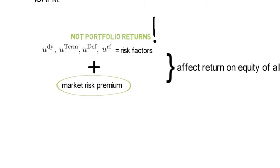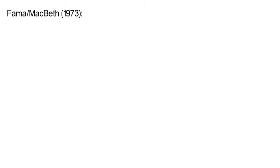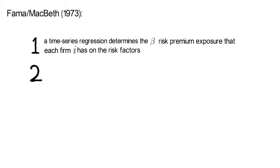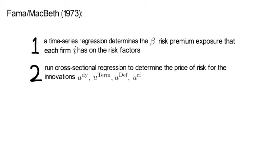Now, Fama and MacBeth proposed a very popular framework. That framework consists of two steps. First, a time series regression, similar to the CAP-M regression, which determines the beta risk premium exposure that each firm i has on the risk factors. And the second step uses the estimated betas from the time series regression and runs cross-sectional regressions, meaning for each point in time, we regress the realized excess returns of all firms on their respective betas in order to determine the price of risk for innovations in the dividend yield, the term spread, default spread or the risk-free rate.